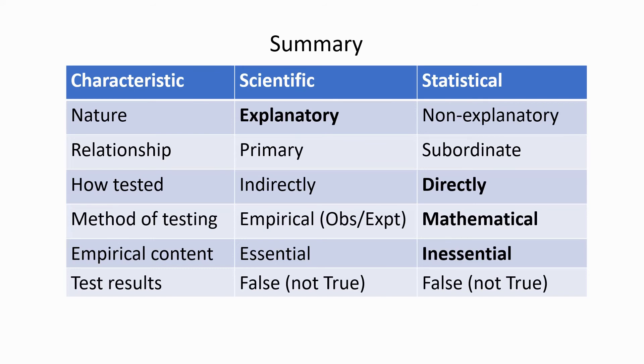We test the scientific hypothesis indirectly by testing its predictions, whereas we test the statistical hypothesis directly by making calculations. Scientific hypotheses are tested with a wide variety of empirical methods, that is, observations and experiments.